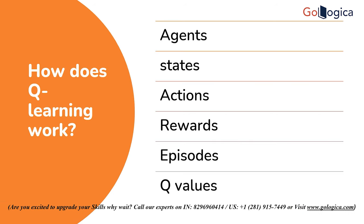Now let's see how Q-Learning operates. Multiple components collaborate to train a model through an iterative approach using Q-Learning models. Through world exploration and ongoing model updates, the agent learns throughout the iterative process. Among the numerous elements of Q-Learning, some of them are agents, states, actions, rewards, episodes, and Q-values.